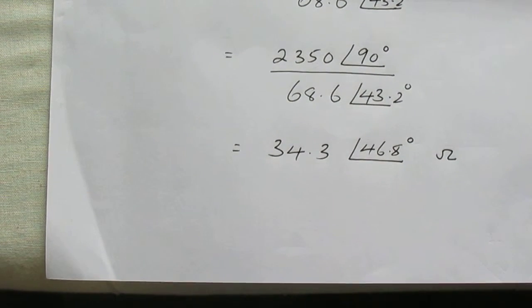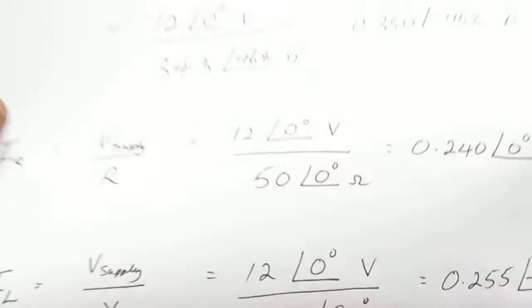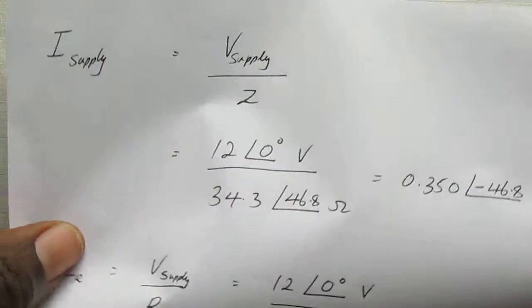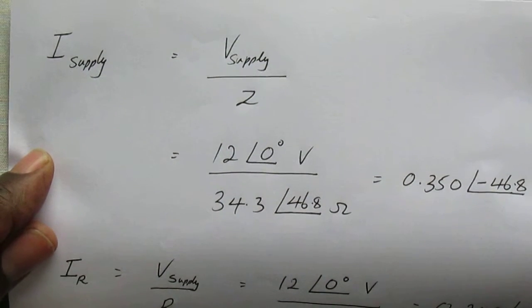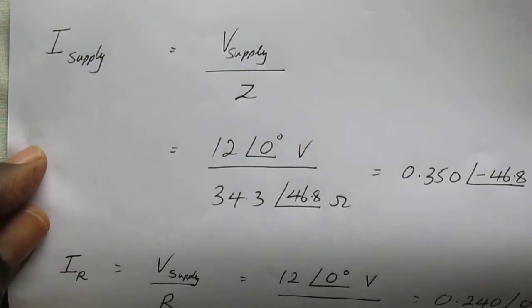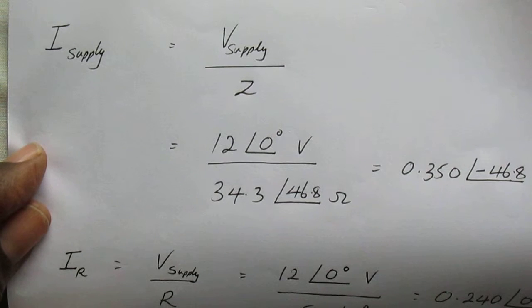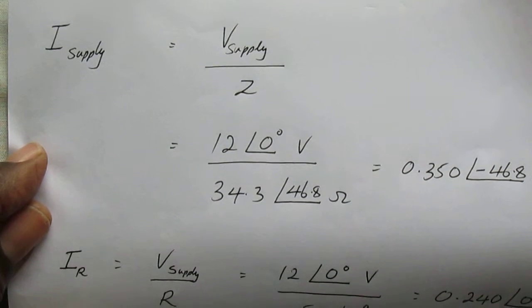Next we will work out the current in the circuit. The supply current equals V supply divided by the impedance, which is 12 angle 0 volts. Remember that the supply voltage is taken as angle 0 as the reference.